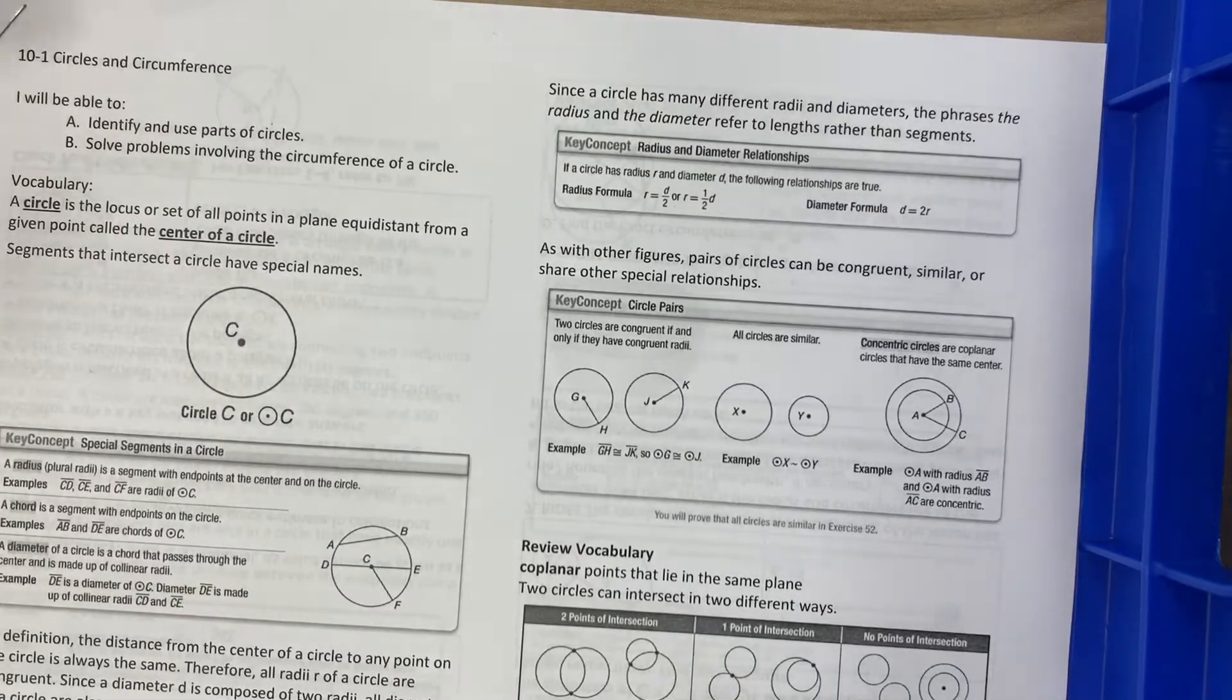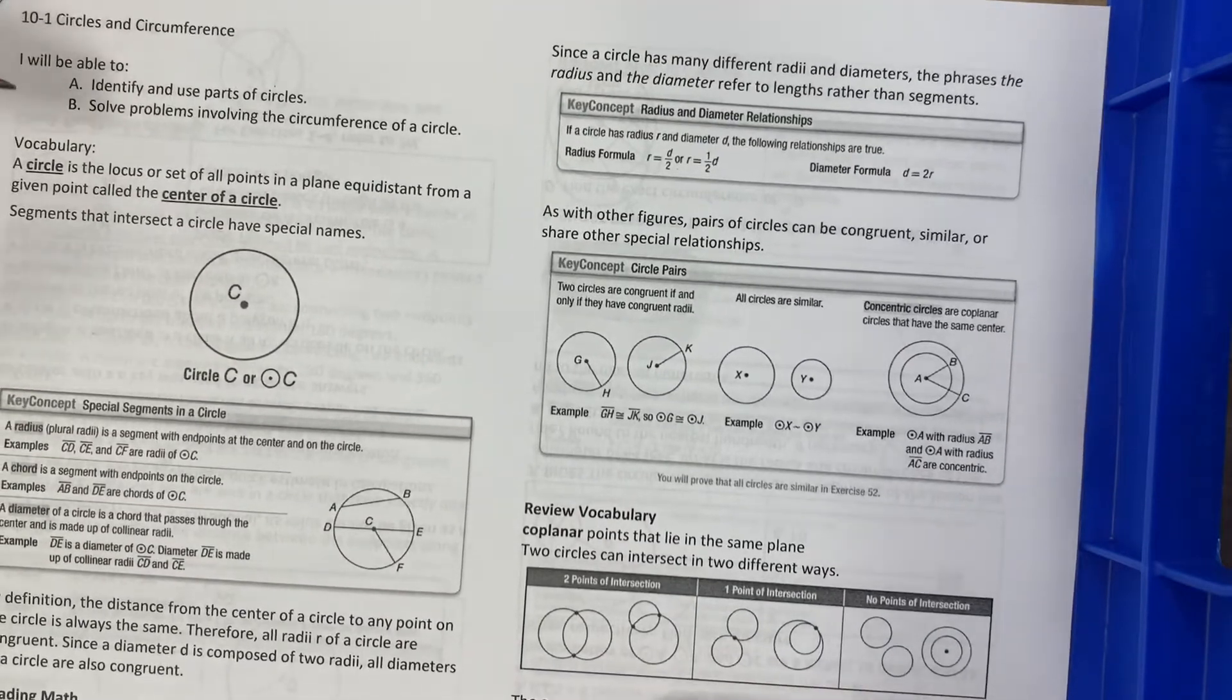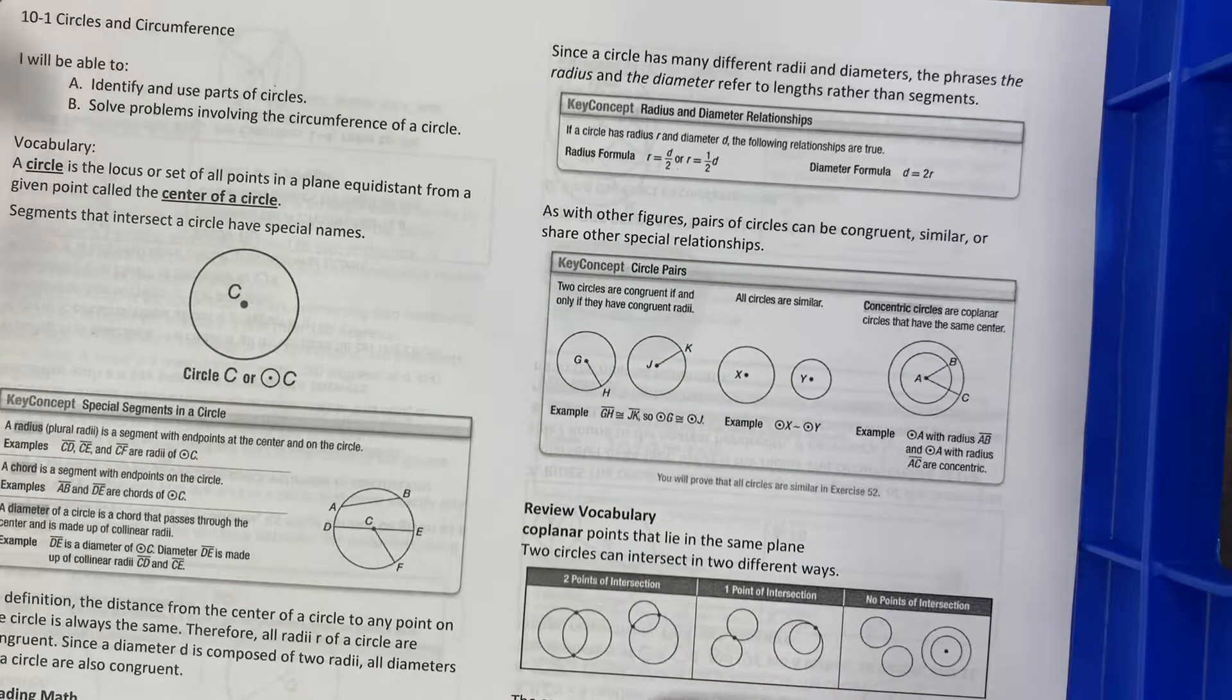All right guys, so today we're going over 10-1 with circles and circumference. A circle is the locus or set of all points in a plane equidistant from a given point called the center of a circle.